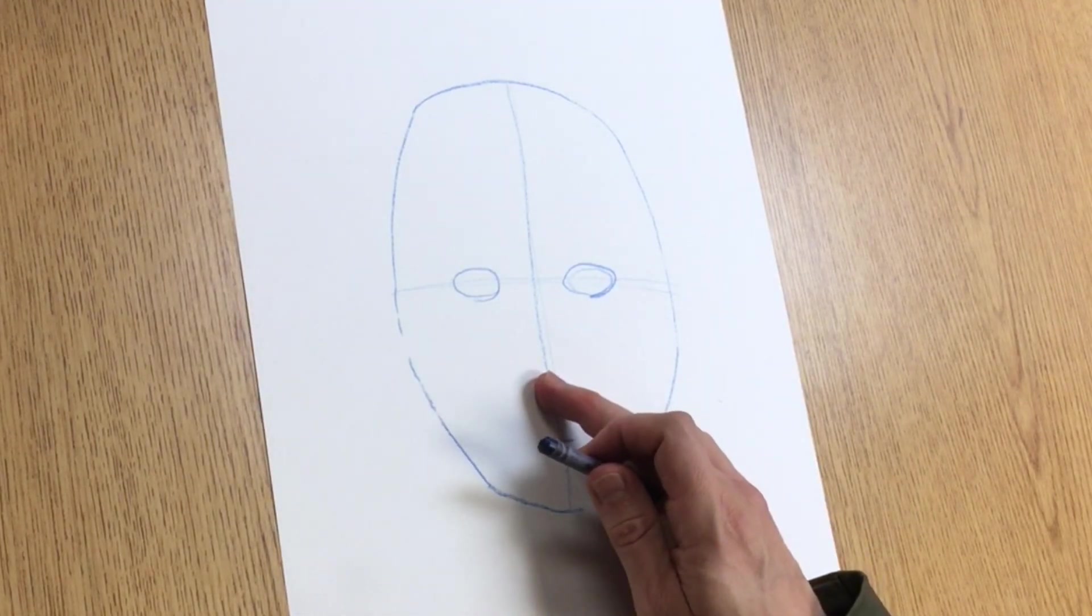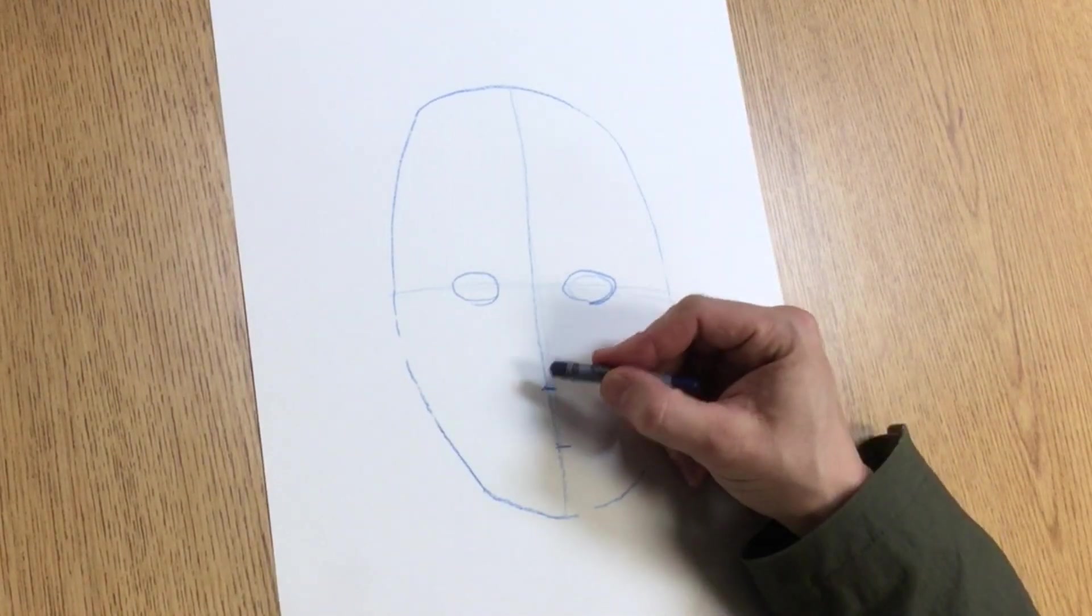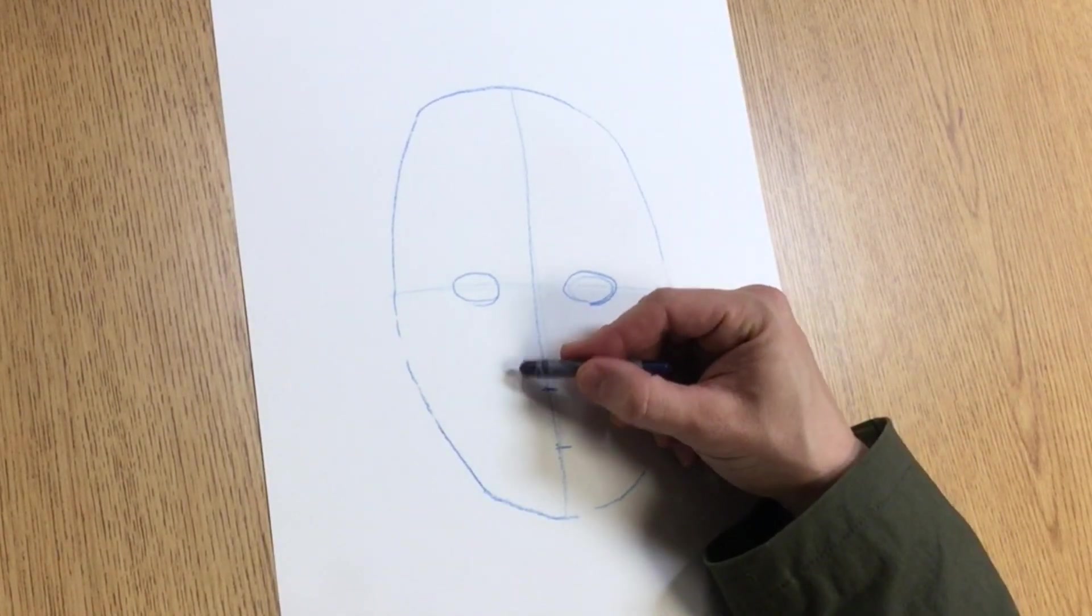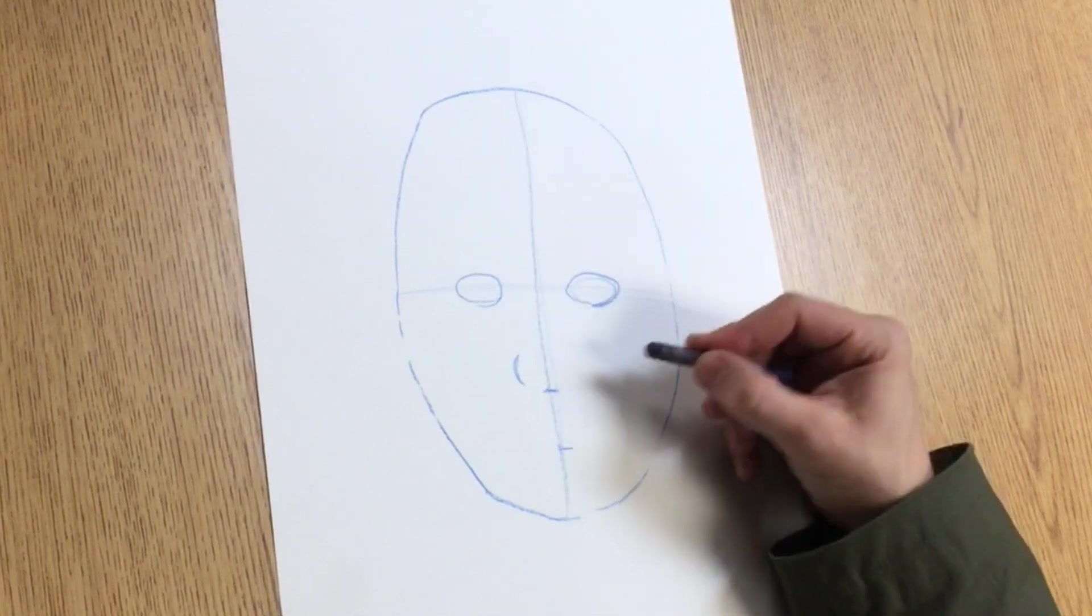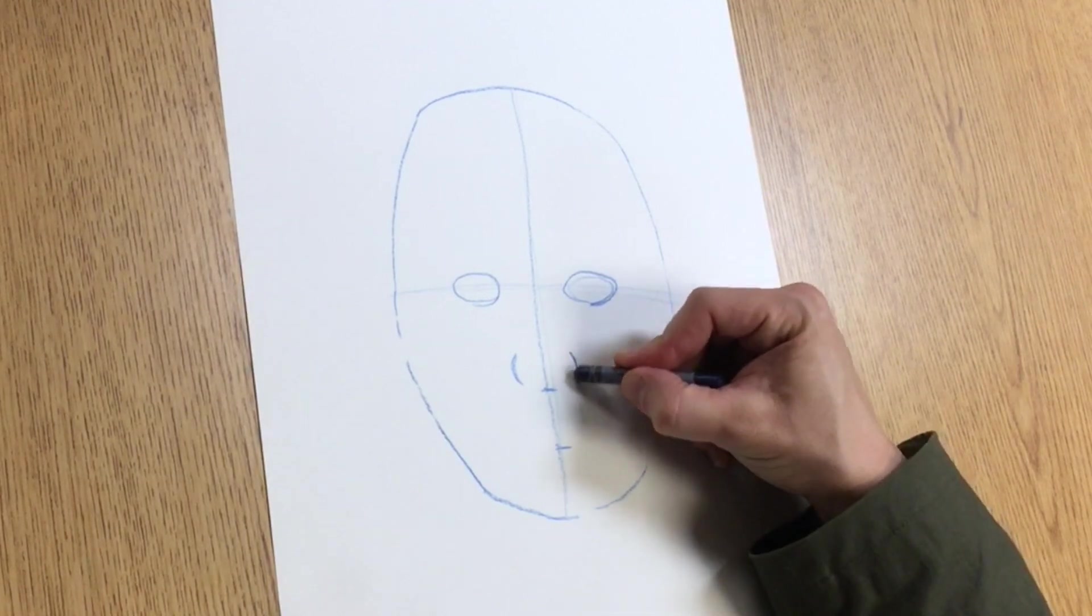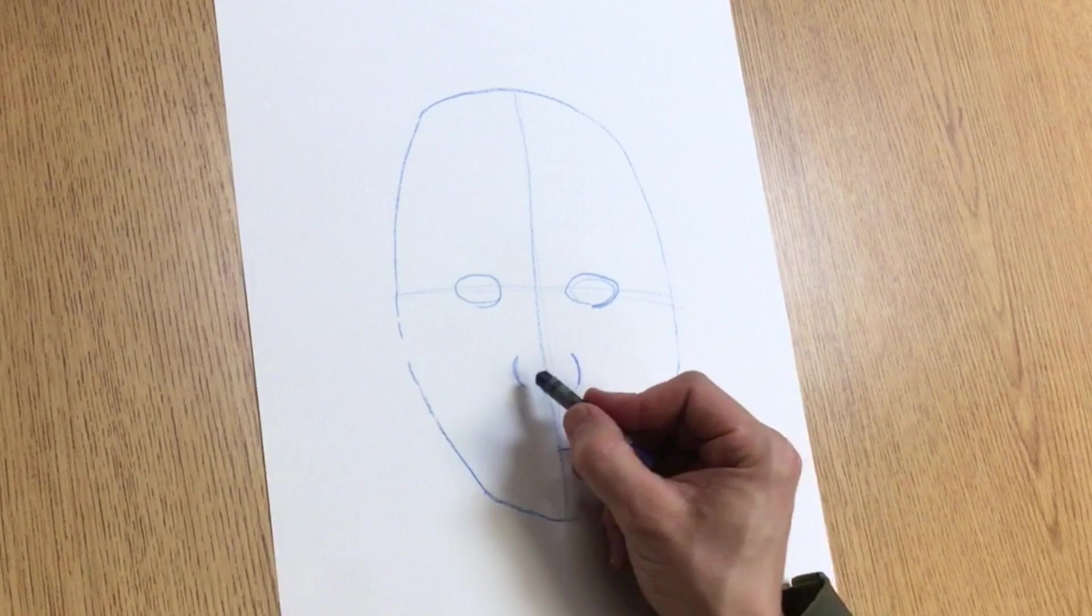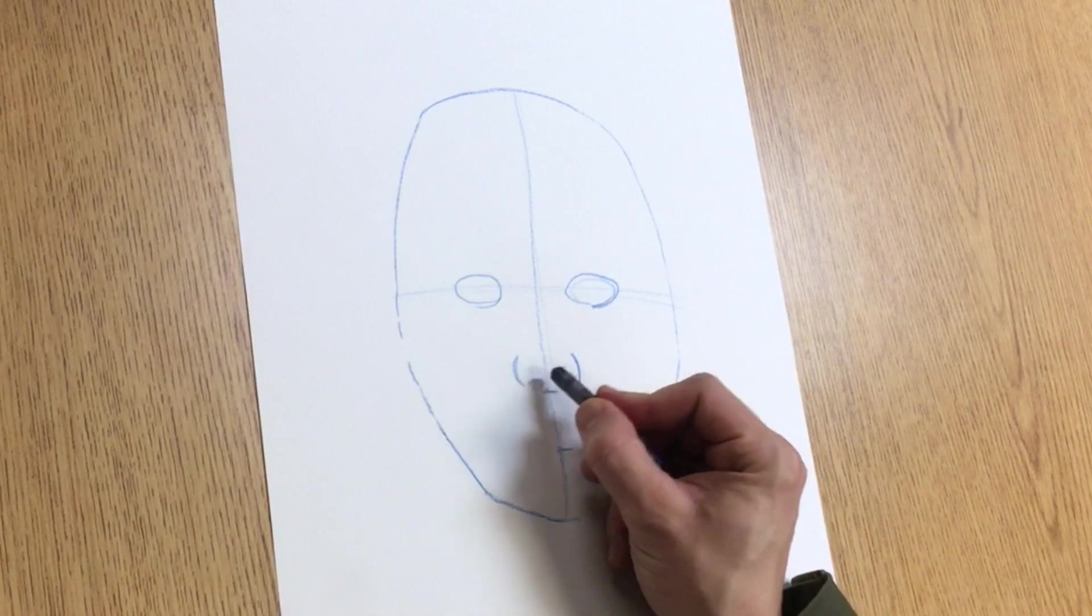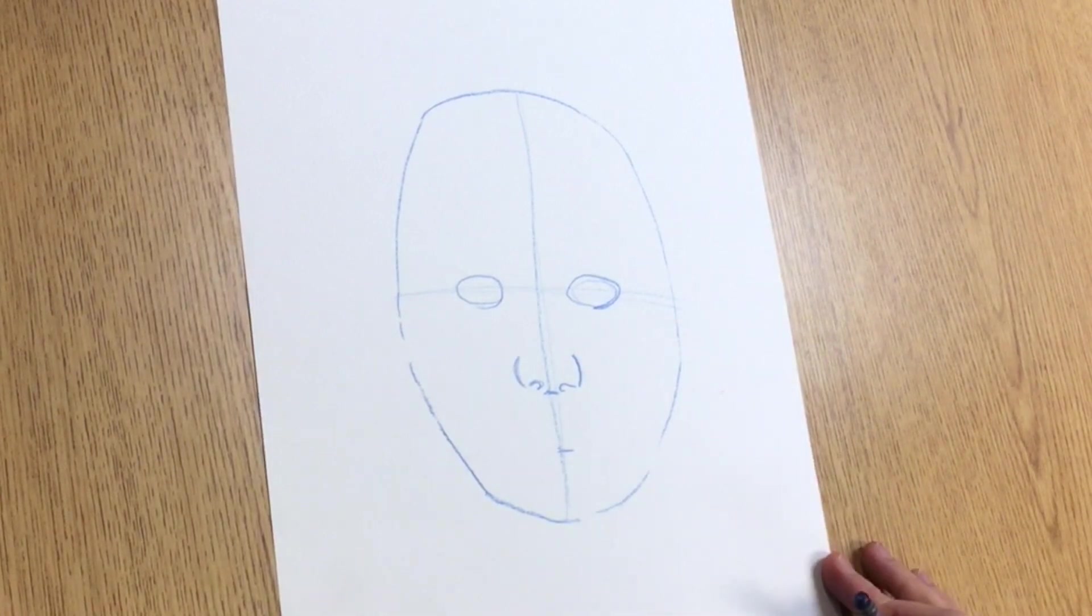And down here at my nose, when I look in the mirror, my nose has little parentheses shapes like a wide open letter C. And I have nostrils. Everybody's nostrils are a little different, but you probably have some.